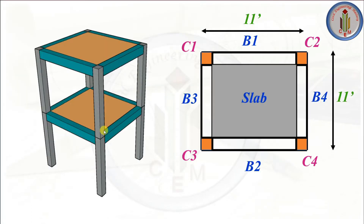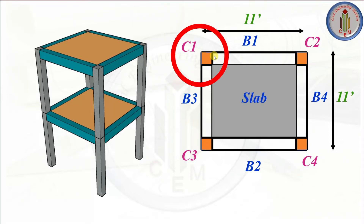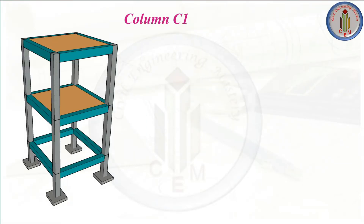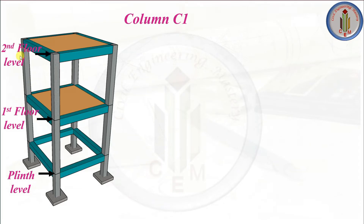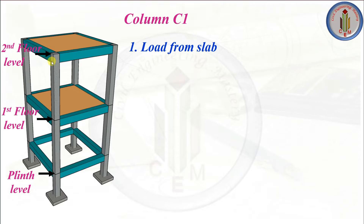First, let's take this G+1 building and calculate the loads coming on the column. We have four columns C1, C2, C3, C4 and four beams B1, B2, B3, B4. The size of the panel is 11 feet by 11 feet. Let's take column C1 and calculate the loads. The load from the slab will transfer to the beam and the beam will transfer the load to the column. Here we are calculating the load from slab directly to the columns.